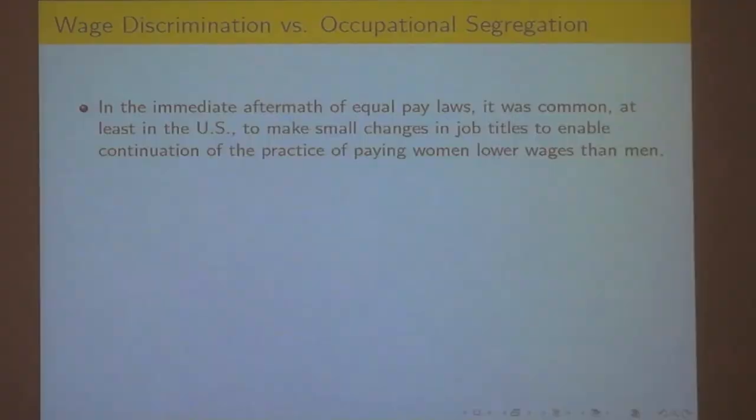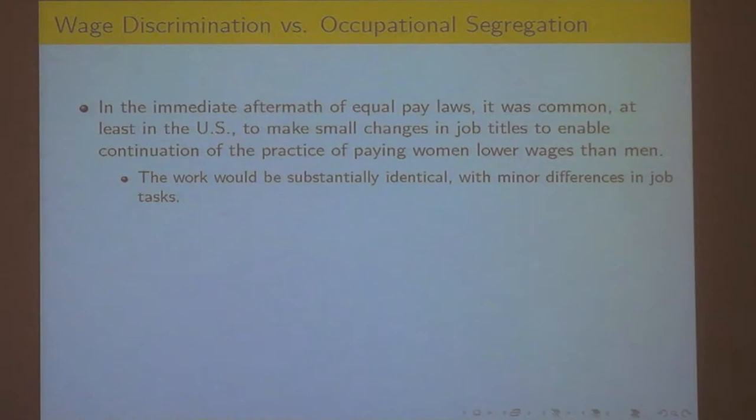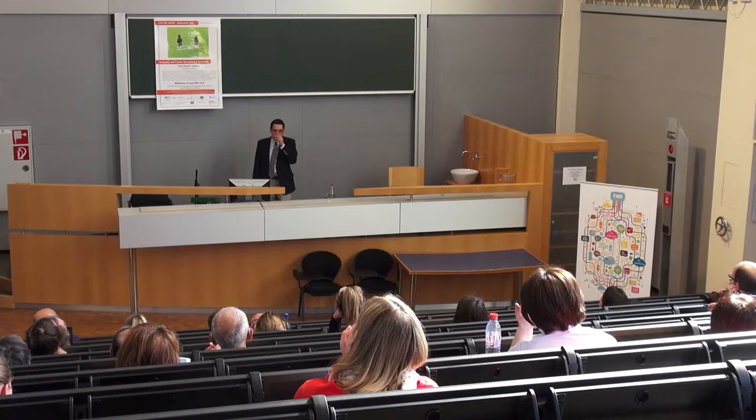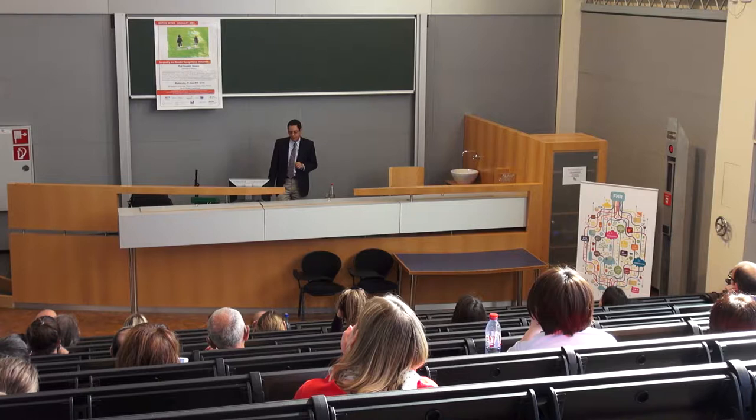Women would be assigned to the lower-paying job category. Another legal means for keeping women's earnings lower — common in the United States — was so-called protective laws, protecting women. As far as I could tell, it protected women from earning higher wages, because there were laws that restricted the hours a woman could work and the types of jobs. Those laws no longer exist; they were struck down as basically illegal and unconstitutional.